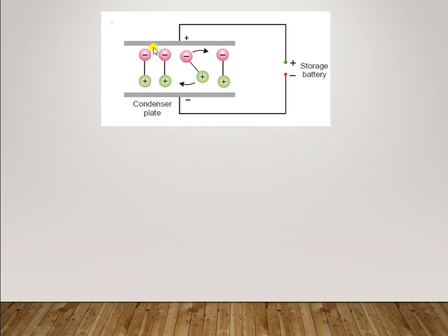These are the plates of the condenser, and in this way your molecules get aligned. This is the positive plate — that is why the negative part of the molecule is collected near the positive plate. This is the negative plate — that is why the positive part of the molecule gets attached towards the negative plate of the condenser.